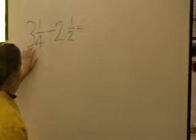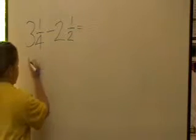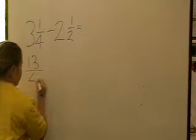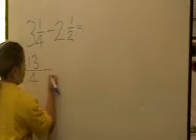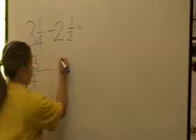What you do is you go 4 times 3 which equals 12 plus 1 which equals 13. 2 times 2 which equals 4 plus 1 which equals 5.